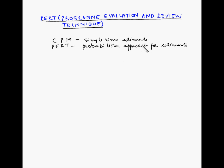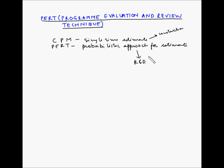In case of construction projects, we can use the CPM technique, while in case of research and development, we can use the PERT technique. CPM is used where project managers can accurately predict how much time a particular activity will take, while PERT is applied in projects where the duration of various activities cannot be predicted with certainty.